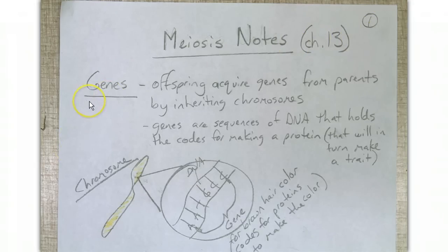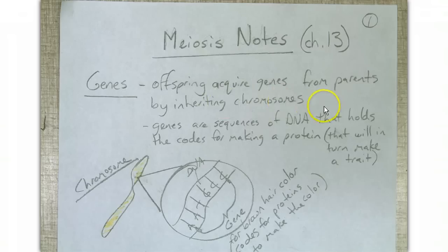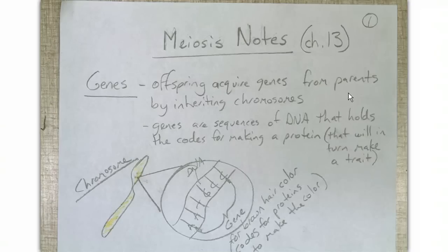The first thing I'd like you to write down is: what is a gene? A gene is a sequence of DNA that holds the codes for making a protein that will in turn make a trait. Offspring acquire genes from parents by inheriting chromosomes. You may have heard that you get your brown hair from your mom — you're not actually getting the hair from your mom; you're getting the gene, which is a sequence of DNA, to make a protein that will in turn make the brown hair. Let's go ahead and sketch this out.